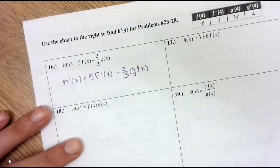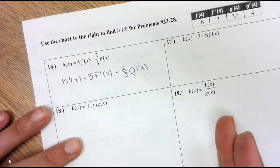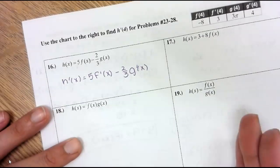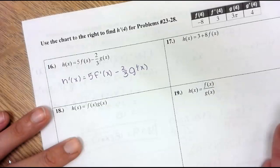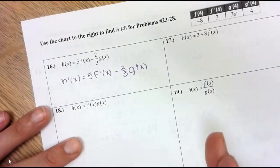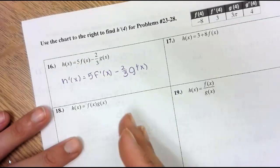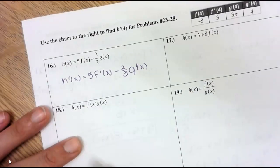Well, if you did the product rule, it would be first, which is 5, times derivative of the second, which is f prime, plus the second, which is f of x, times derivative of the first, and the derivative of a constant is always 0. So if you have a constant in front of a function, it doesn't matter because its derivative will always 0 out. So that constant sort of just multiplies times the derivative.